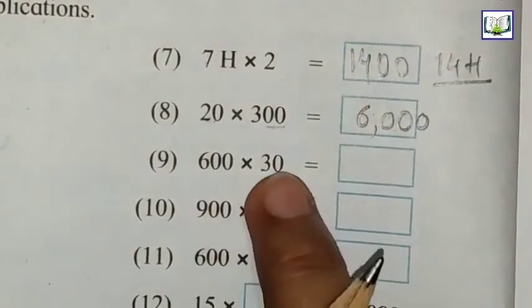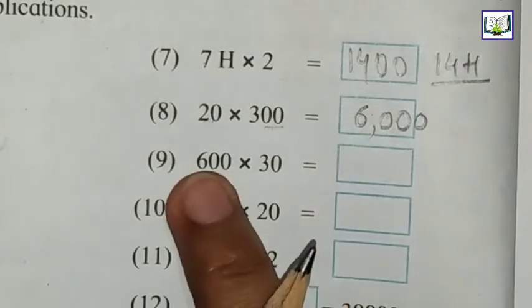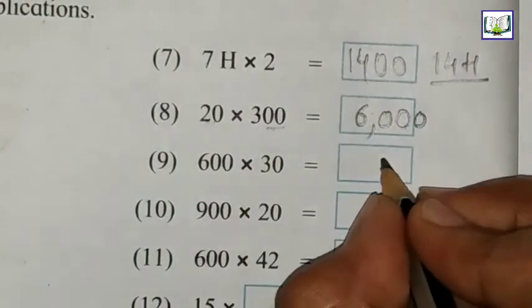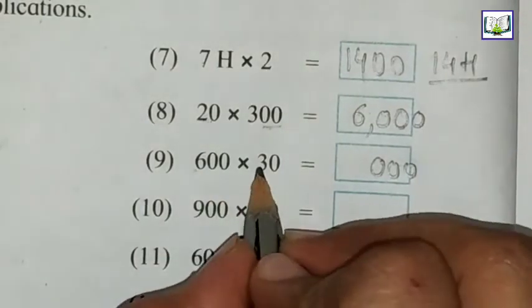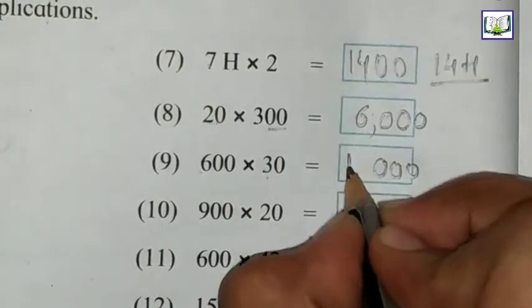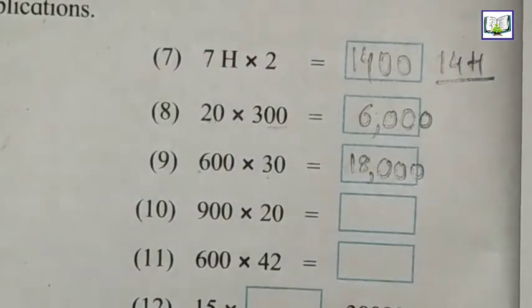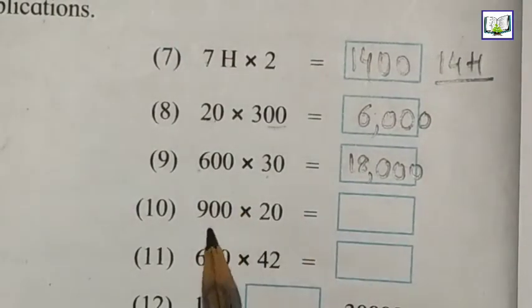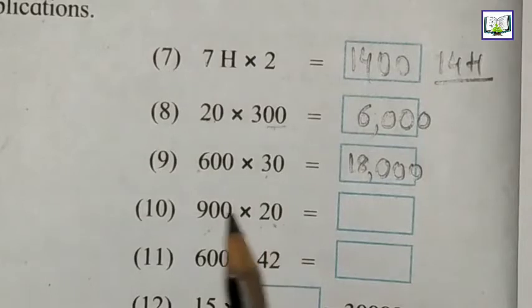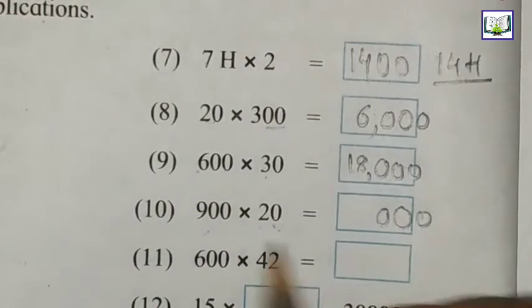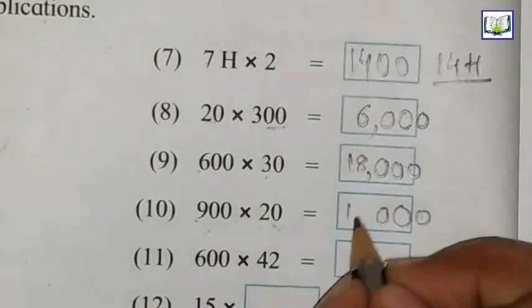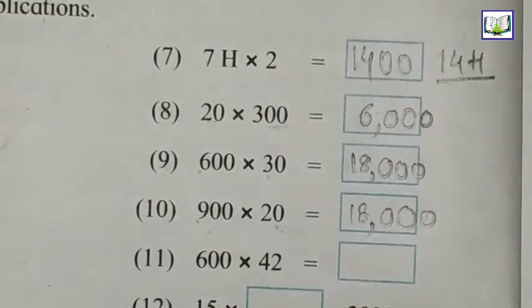Let's see: 600 multiply by 30. How many zeros are here? Total 3 zeros. So we write 3 zeros. 6 ones are 6, 6 twos are 12, 6 threes are 18. So answer is 18,000. 900 multiply by 20. How many zeros? 3 zeros, so we separate the zeros first. 9 ones are 9, 9 twos are 18. Again, the answer is 18,000.